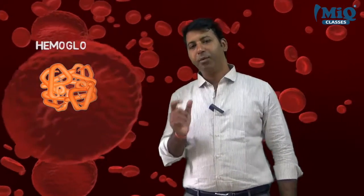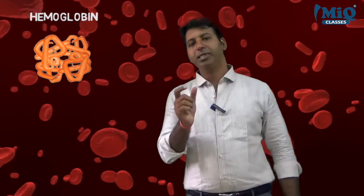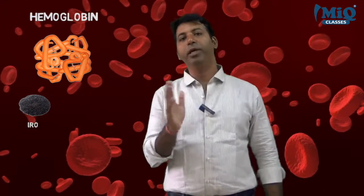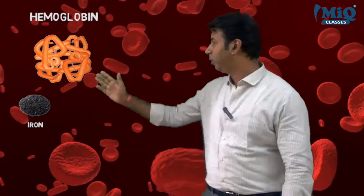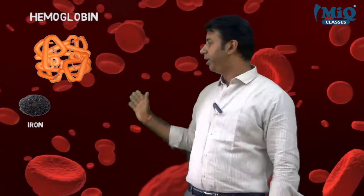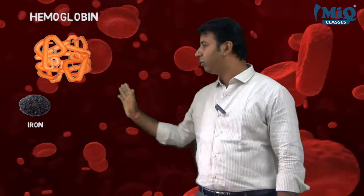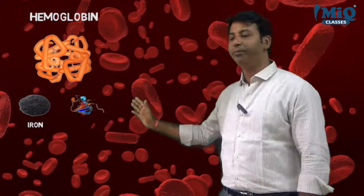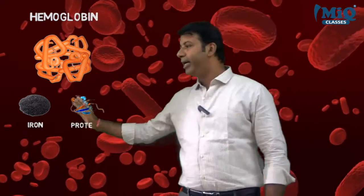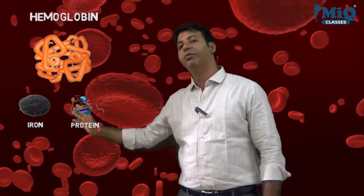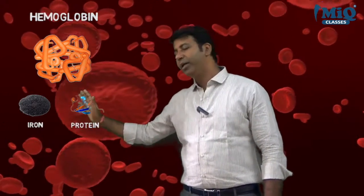If you split the word hemoglobin into two parts: 'heme' means iron, and 'globin' is a protein. These iron contents are very necessary for us.